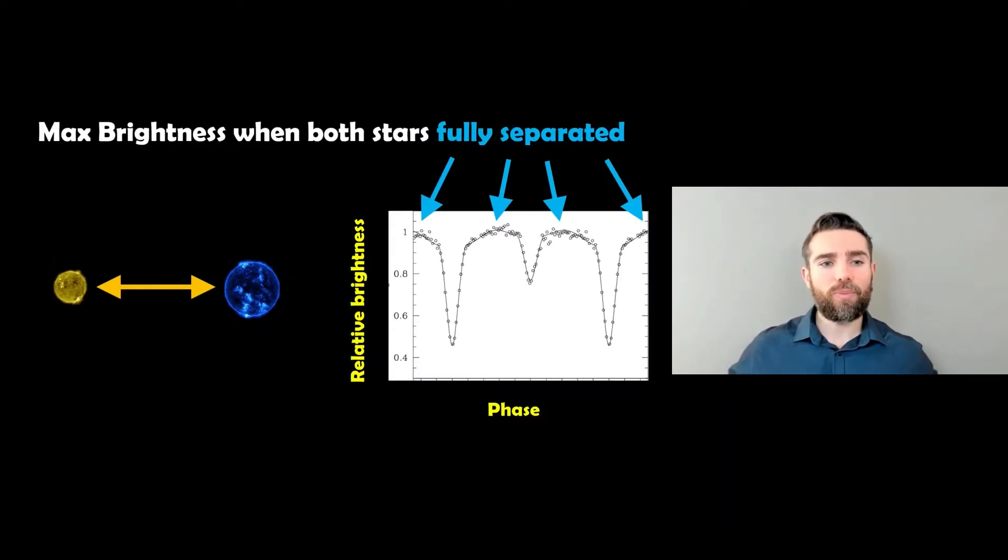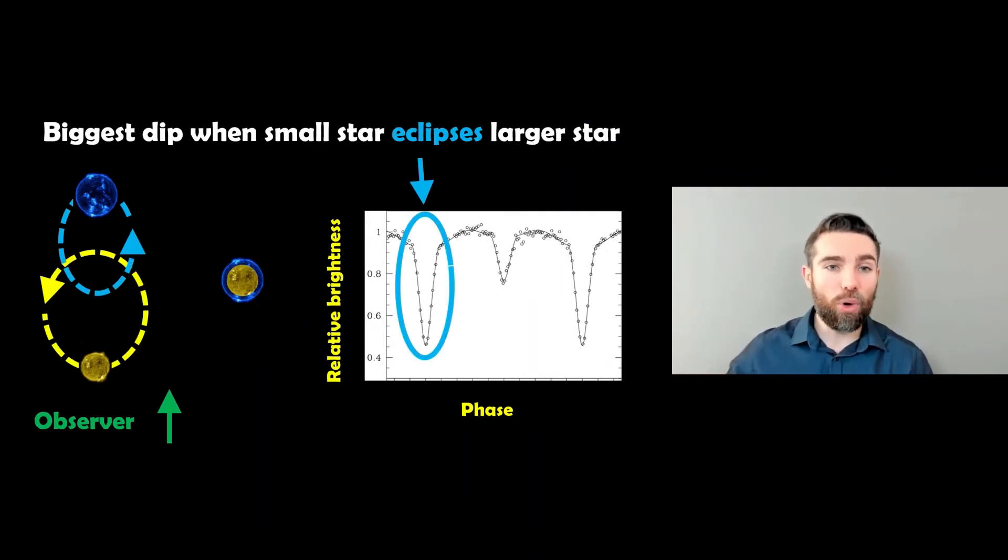So here, the maximum brightness you would actually observe from this binary system is when the two stars are next to each other, and they're fully separated. So imagine they're going round, when they're fully separated, we get the peak brightness there. Now, when the smaller star passes in front of the larger star, then we get the biggest dip in brightness. So it blocks out light from the bigger star, we get the largest drop in the brightness of the star at that point.